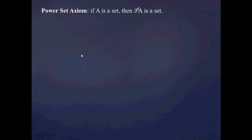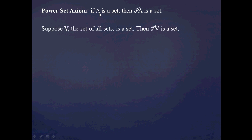I'd like to present yet another argument against the set of all sets. To do that, I'll remind you of the power set axiom, which says that if A is a set, then the power set of A is also a set — it lists out all the subsets of A. Notice that when you take a power set, the number of objects increases: if A has n members, then the power set of A has 2^n members. For infinite sets this is also true in terms of cardinality.